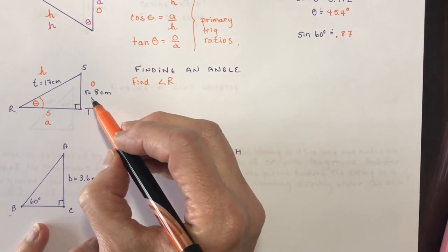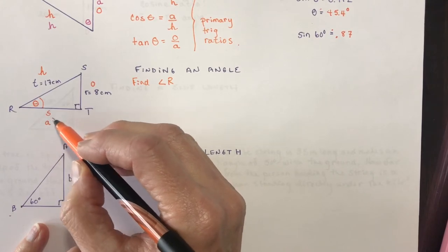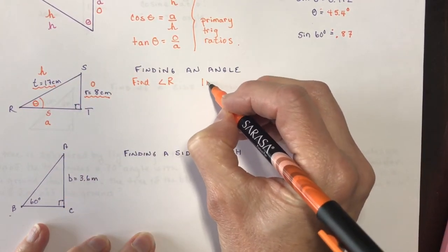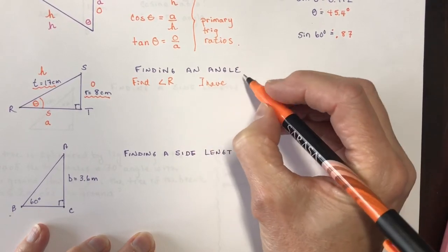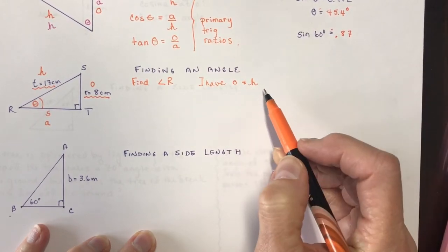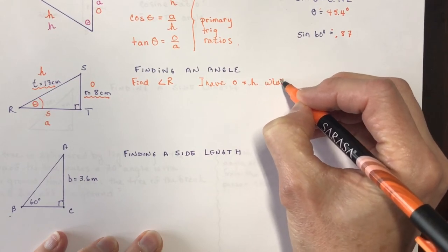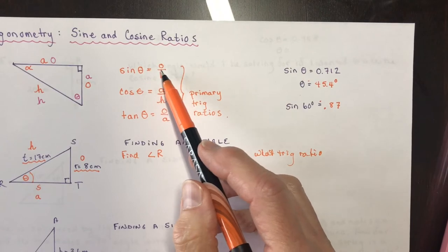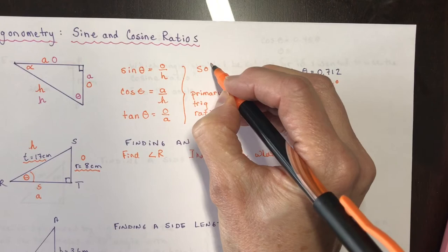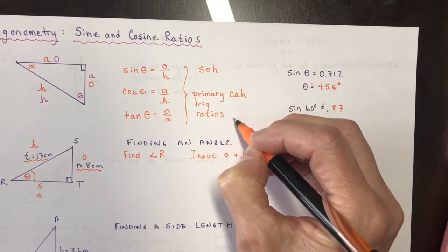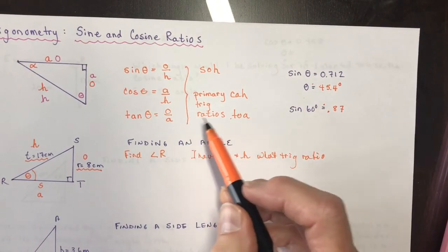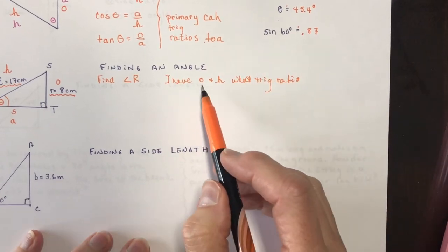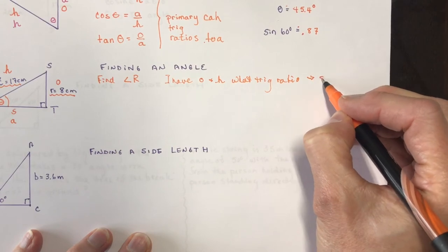The sides I'm working with are the opposite and the hypotenuse — I'm not using the adjacent side here. So I have O and H. Which trig ratio uses O and H? Looking at SOH-CAH-TOA, O and H belong to SOH — so I'll use the sine ratio.